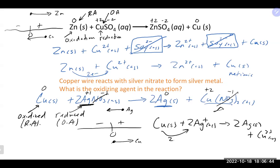The net ionic equation shows copper giving up two electrons to two silver ions, making the copper become Cu²⁺ and the silvers become solid silver metal. For copper, +2 is the most common charge when copper is being oxidized — it could form +1, but +2 is most probable in most cases.